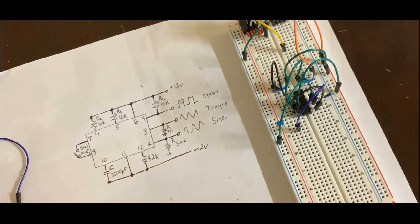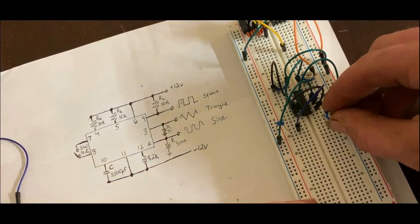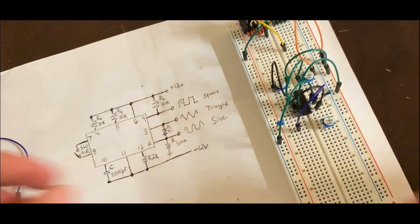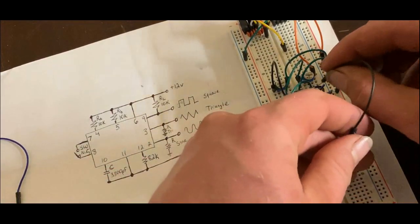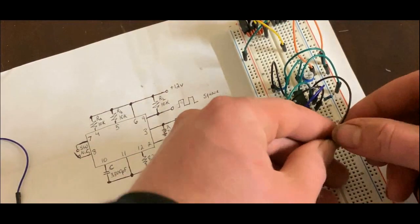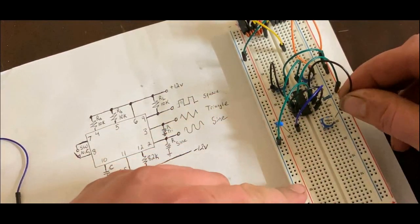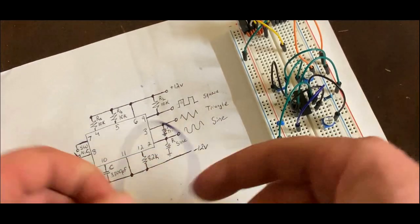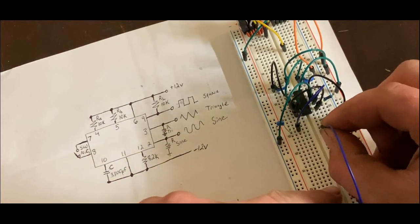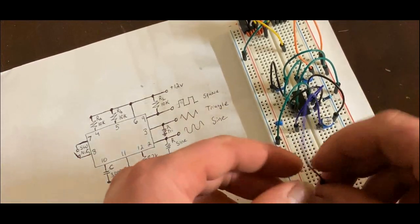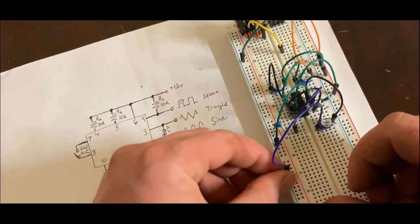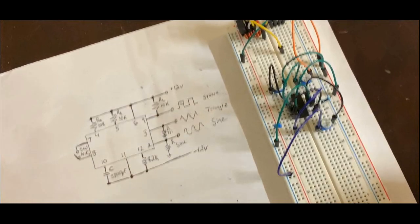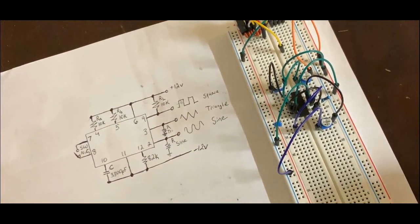I'm going to use a potentiometer instead. So, I'll put it down here. And then, I'll go from pin 12 to the top pin here. And then, the middle pin goes to negative 12 volts. And then, it's all done, for the most part.